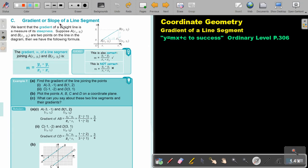The gradient or slope of a line segment. We learned that the gradient of a straight line is a measure of its steepness. Suppose A, x1, y1 and B, x2, y2 are two points on the line in the diagram.